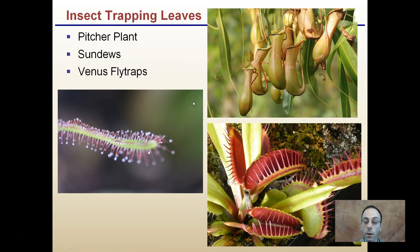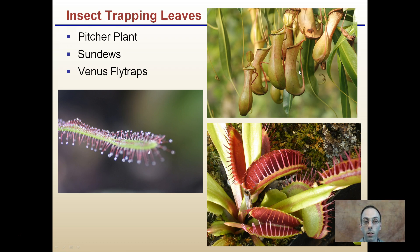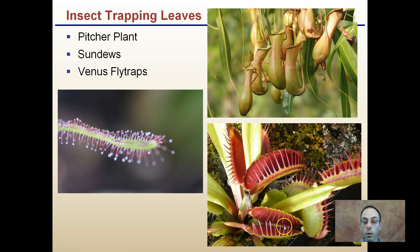Other leaves are insect-trapping leaves — very specialized. The pitcher plant looks like little pitchers: flies fall in and get trapped, then slowly get digested. The sundew has what look like little water droplets that are extremely sticky — a fly or bug landing on them gets stuck and the plant consumes it. The Venus flytrap closes when a fly triggers the little fibers inside, eventually consuming the fly for proteins and nitrogen. These plants tend to grow in environments where nitrogen is very low.